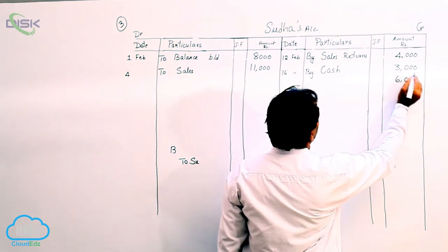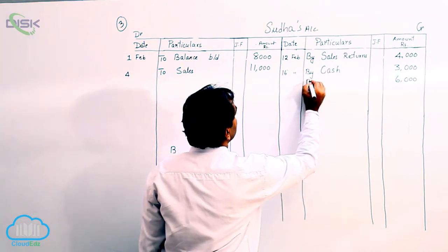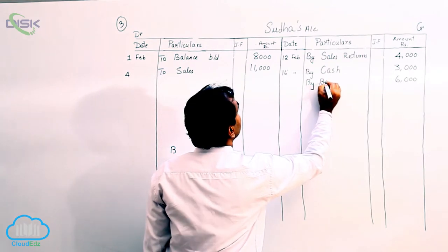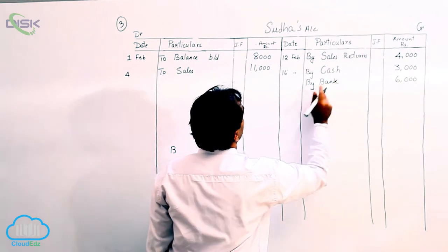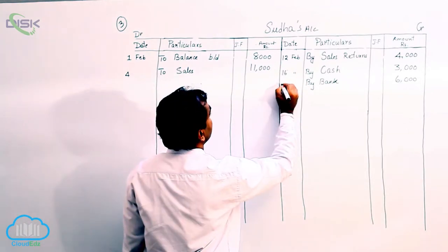Now we are crediting Sudha's account with 6000. As a result, we need to state the reason why. We got a check. Check means you remember we use the word bank. So by bank, the date is 22nd.